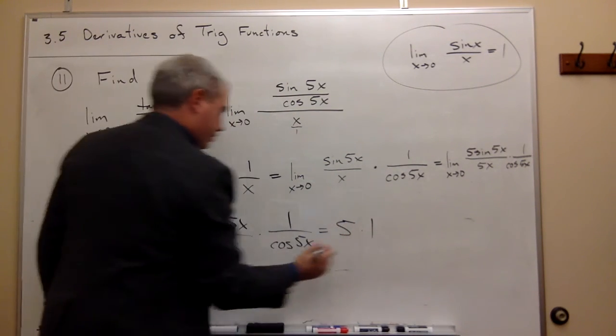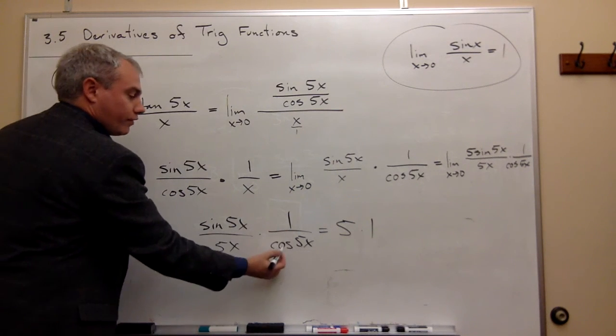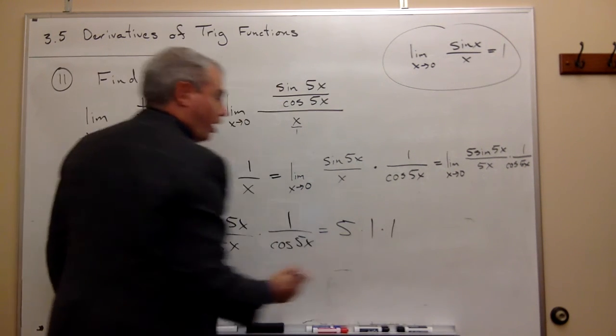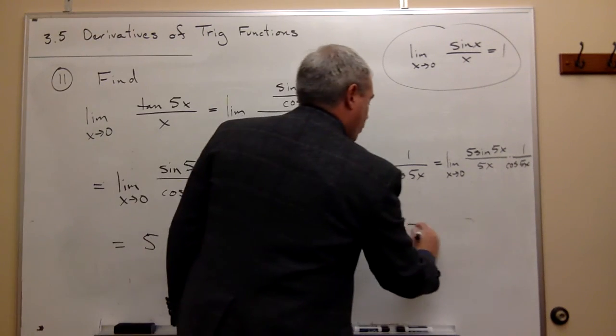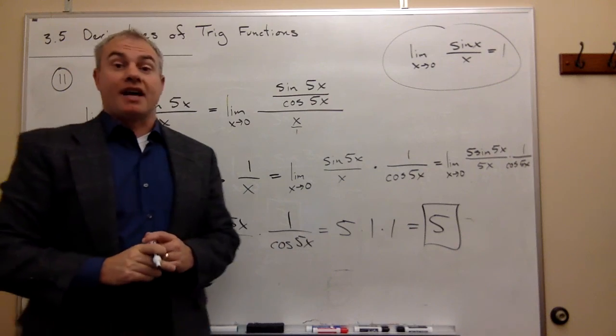So I get 5 times the limit as x goes to 0 of this guy, which is 1, times the limit as x goes to 0 of 1 over cosine of 5x, which is 1. So 5 times 1 times 1 is 5. And that's my limit.